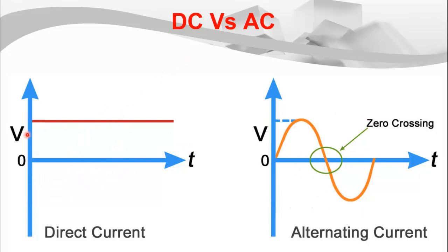On my left you can see the DC voltage. DC quantity has a straight line with respect to time, it means that its value never changes with time. There might be small oscillations due to disturbance, but the magnitude of the voltage or current will remain the same throughout the time.